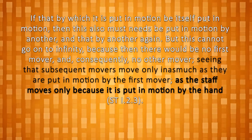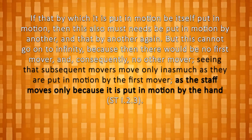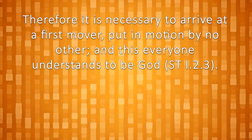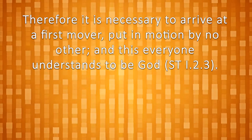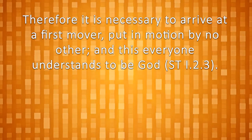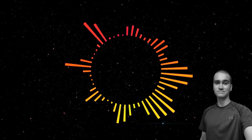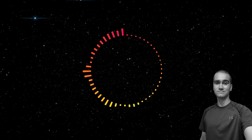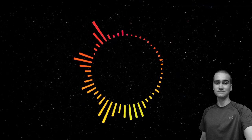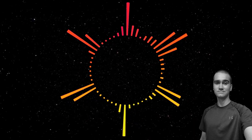Therefore, Aquinas is indeed talking about an essentially ordered causal series, which is why the series cannot go on to infinity. Aquinas concludes by saying, therefore it is necessary to arrive at a first mover put in motion by no other, and this everyone understands to be God. This first mover is, of course, what I earlier called pure act, and Aquinas correctly identifies as being with God. Why does he identify this being with God? Because his pure act possesses all of the divine attributes that I talked about earlier, which is what people traditionally ascribe to God.